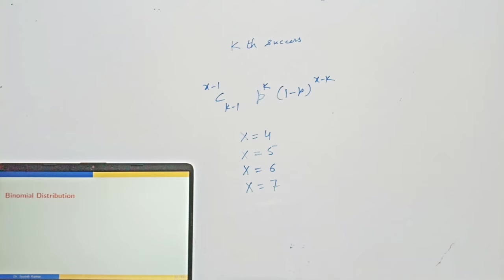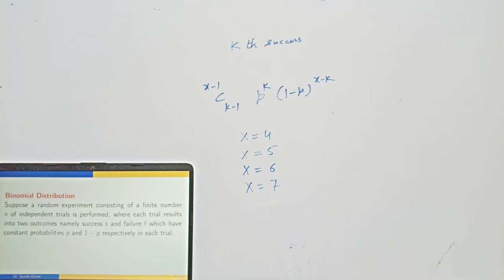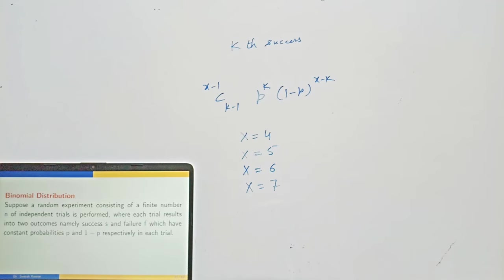The next distribution is binomial distribution. Let's first see the conditions. Suppose a random experiment consisting of a finite number n of independent trials is performed. Unlike the geometric distribution which had a series of independent trials, here the number of trials is finite, given as n. Each trial results into two outcomes namely success and failure, with constant probabilities P and 1-P respectively. X denotes the number of successes in the n trials.